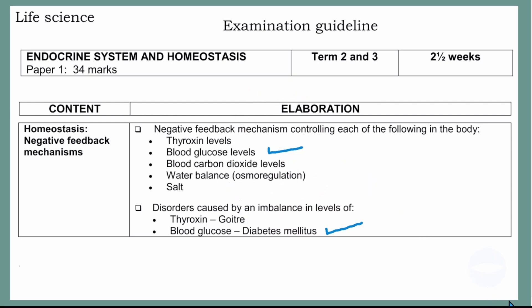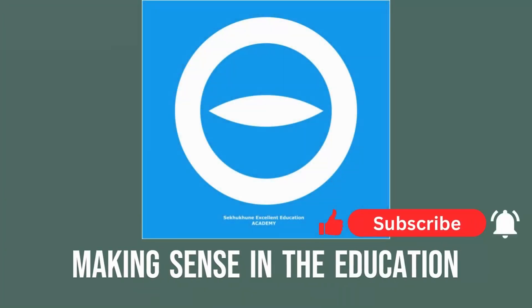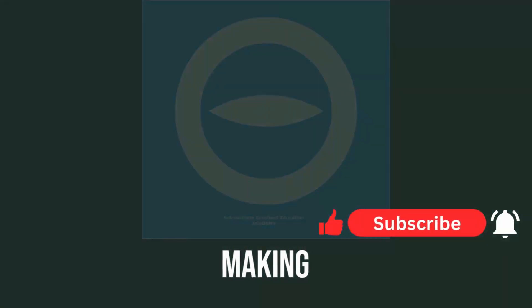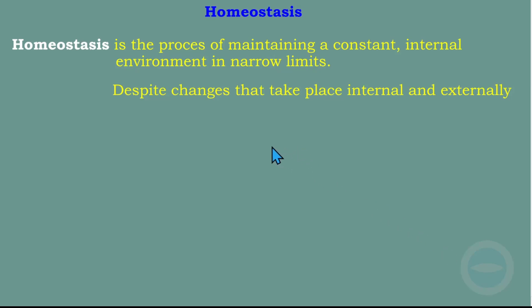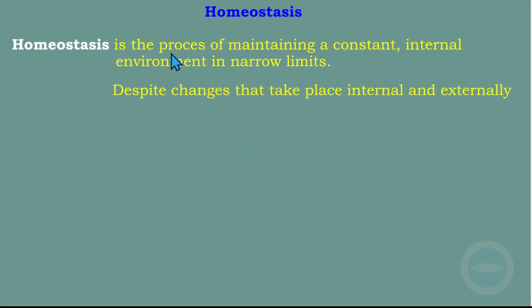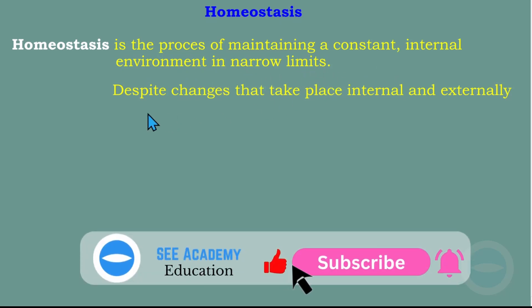Without wasting more time, let's get to it. In negative feedback, the first thing we need to know is homeostasis. We must know the definition of homeostasis. These definitions I got from the examination guideline, so it's very safe to use definitions from the guidelines or the CAPS document. Homeostasis is the process of maintaining a constant internal environment within a narrow limit, despite the changes that take place internally and externally.